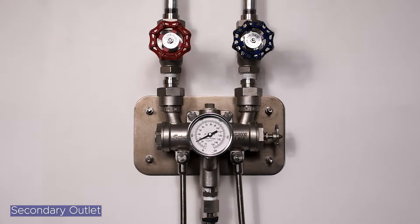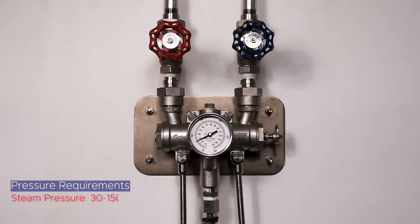This great feature allows factories to pipe in a secondary station that will operate at the same water temperature that exits the Duramix 8000's primary outlet. This unit requires steam pressure of 30 psi to 150 psi and water pressure of 30 psi to 150 psi.